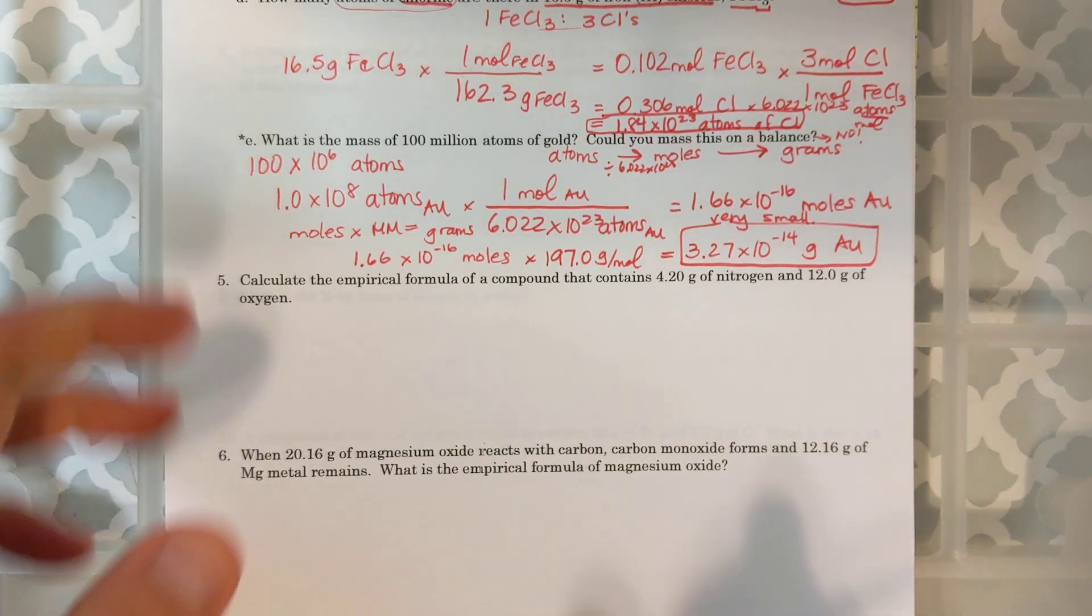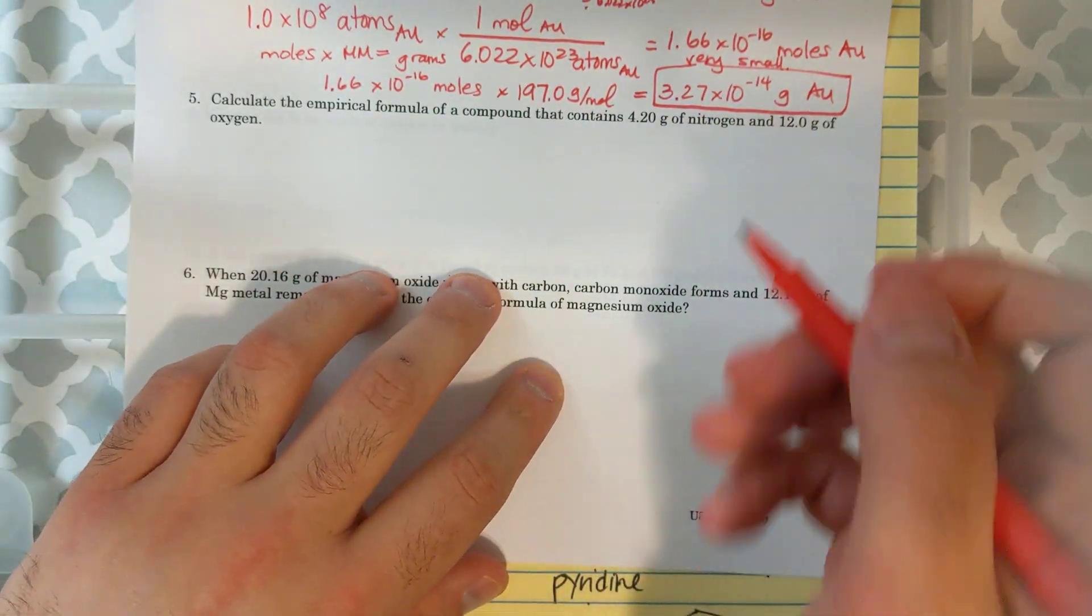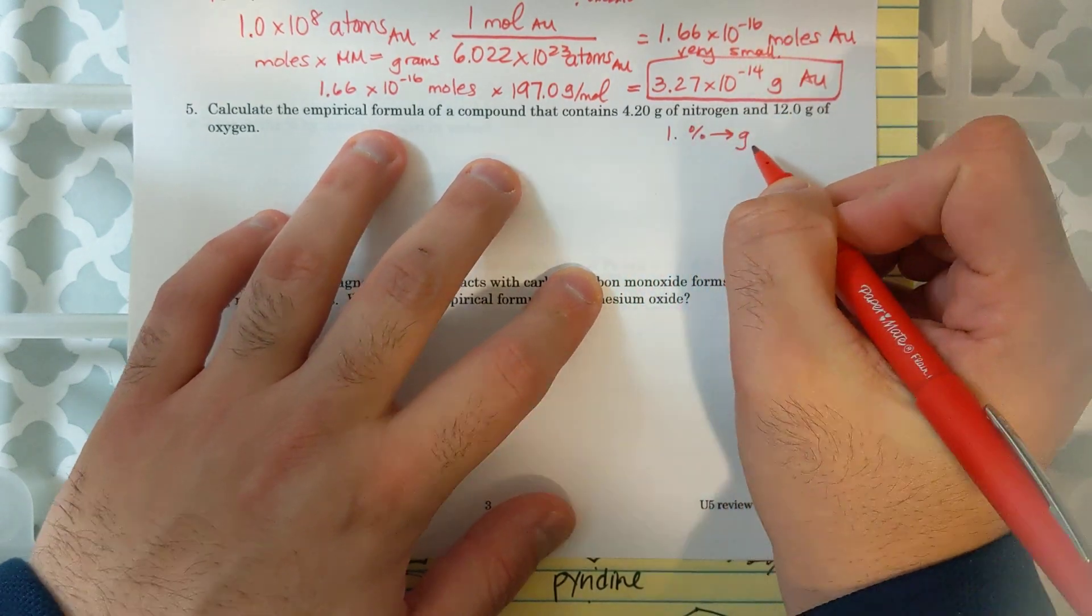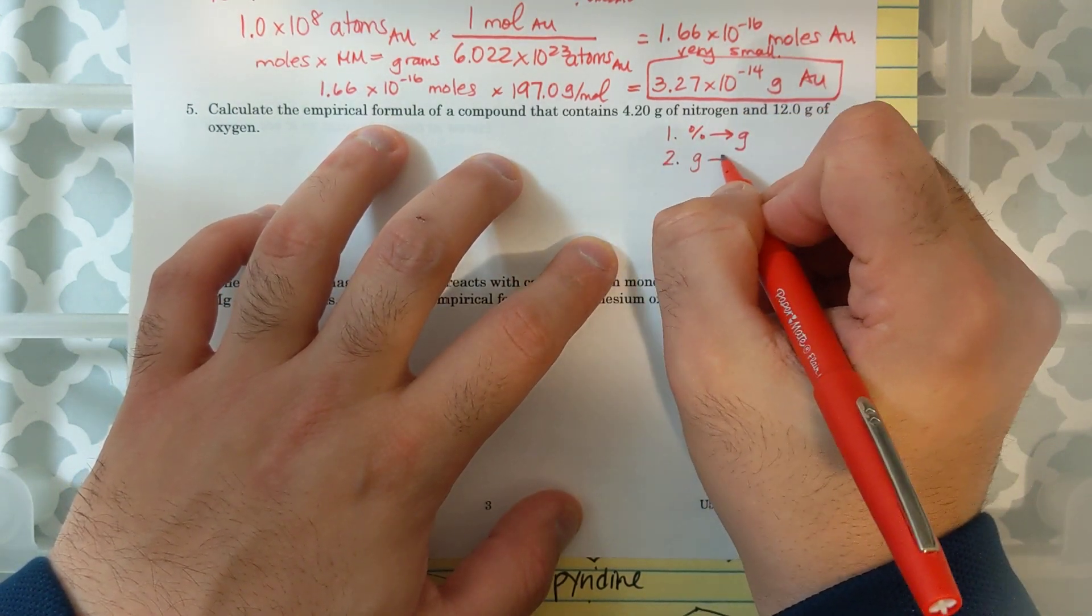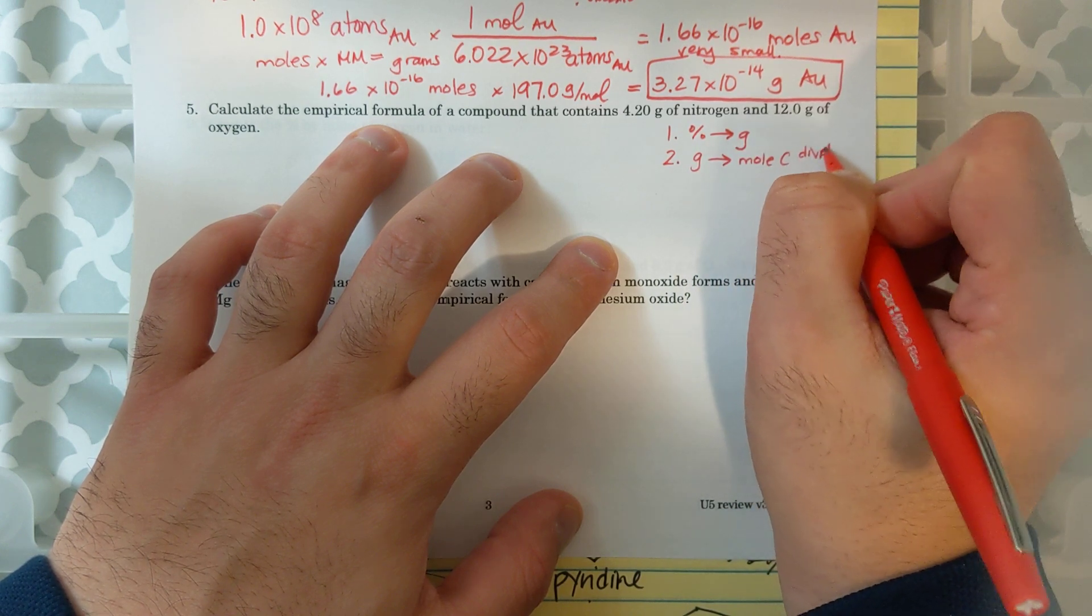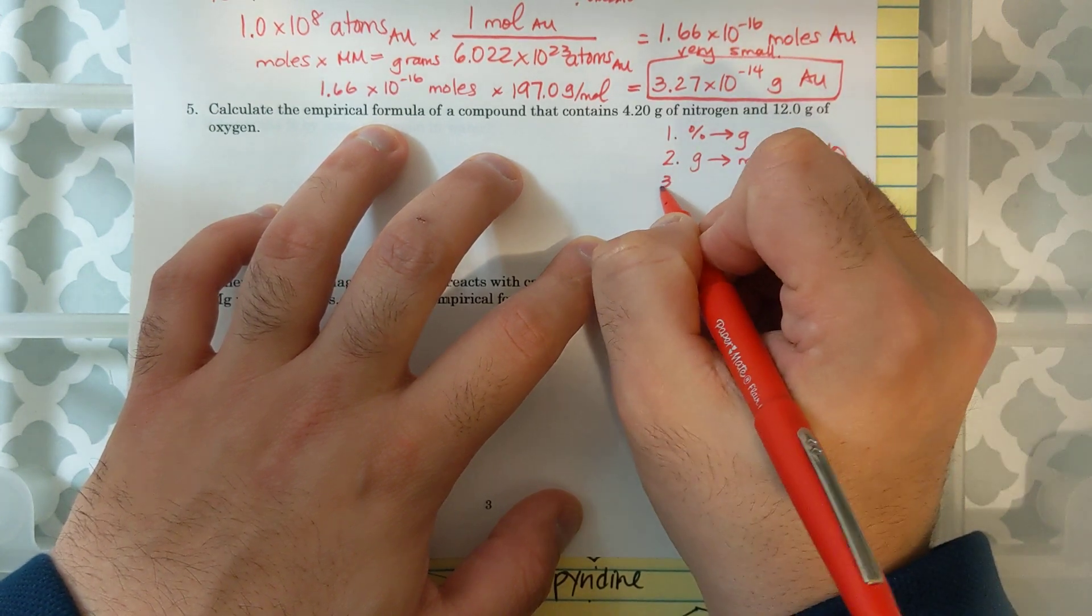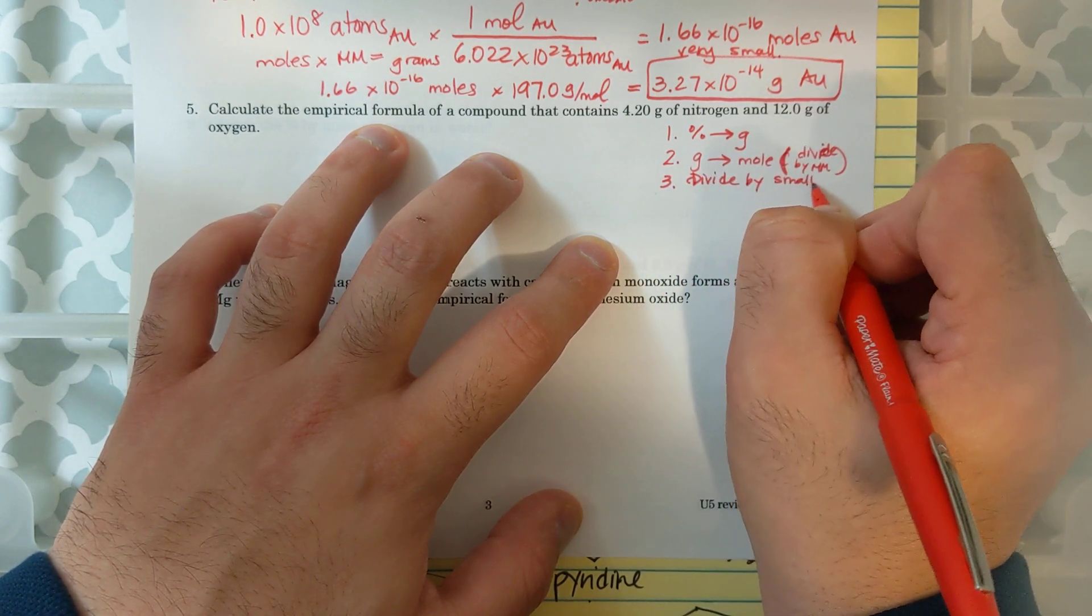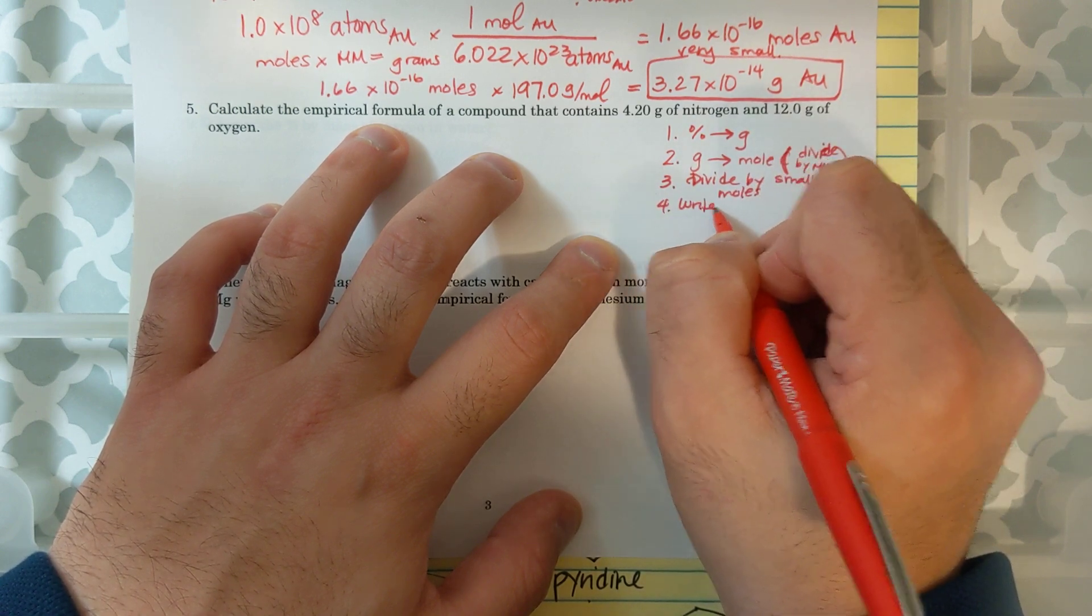Now I want you to remember that there is a procedure, and I'm going to write it here on the side. The first step is converting percentages to grams. We already have grams, so we don't have to do that. The second step is converting grams to moles, dividing by molar mass. Third step is divide by smallest moles. And fourth is write the formula.